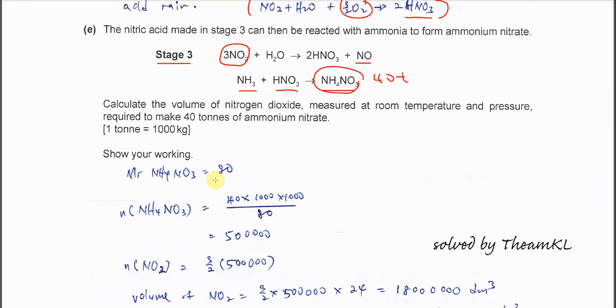So first calculate the moles of ammonium nitrate. Get the molar mass - so it's 80. After that find the mole. 40 tons, you have to convert to grams, so times 1000 times 1000 again you get the grams.